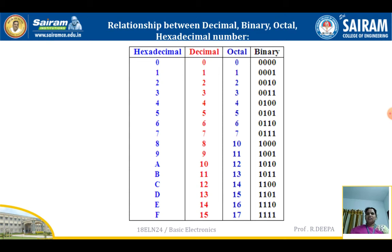The relationship between number systems: hexadecimal is 0 to F, decimal is 0 to 15, and octal is 0 to 7 — where 8 is represented as 10, 9 as 11, and 10 as 12 in octal. For binary, any decimal number can be represented in 4 binary digits: 0 is 0000, 1 is 0001, 2 is 0010, 3 is 0011, up to 15 which is 1111.